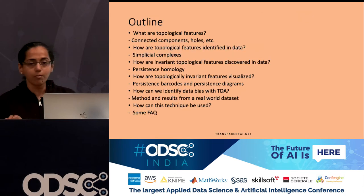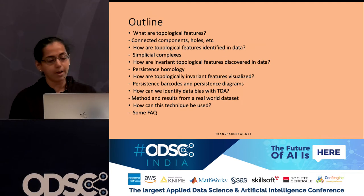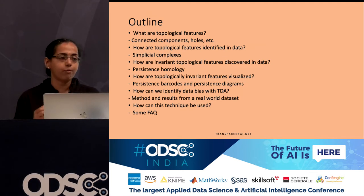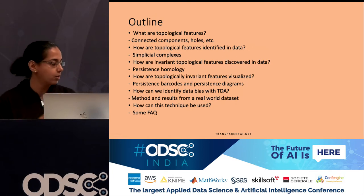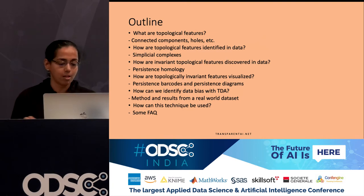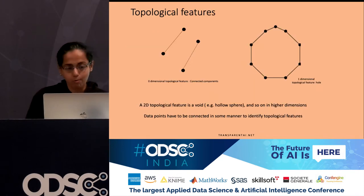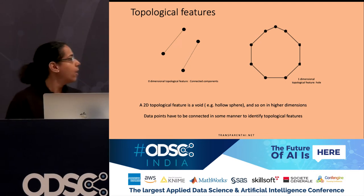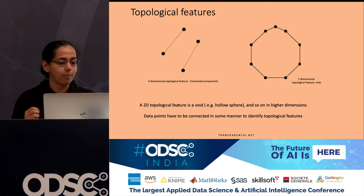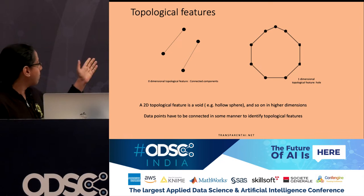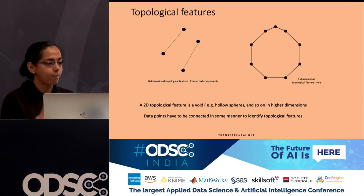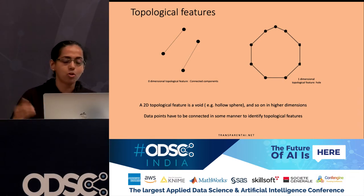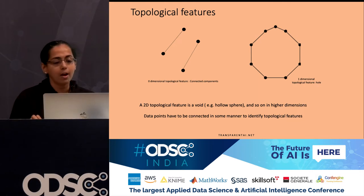The rest of the talk covers: what are these topological features, how can they be identified in data sets, how can we visualize them, and how can this be used to identify bias in data sets. A cluster or connected component is a zero-dimensional topological feature — a bunch of connected points in your data set. A one-dimensional topological feature is a hole, characterized by a cavity in the center. In higher dimensions you have voids — imagine a sphere with a cavity or hole in the center.